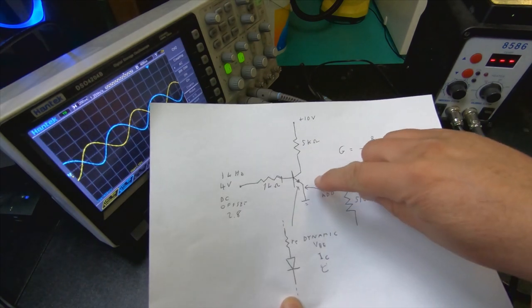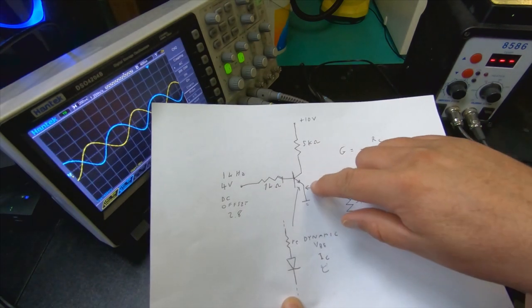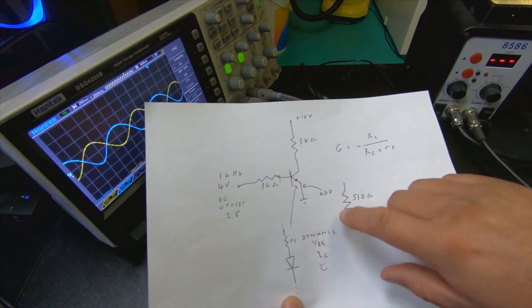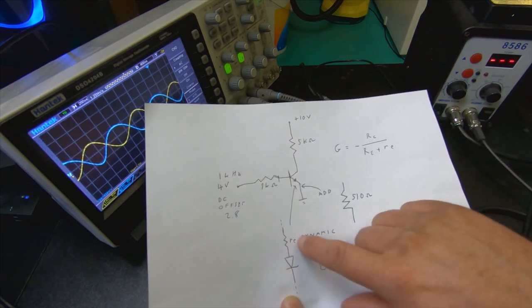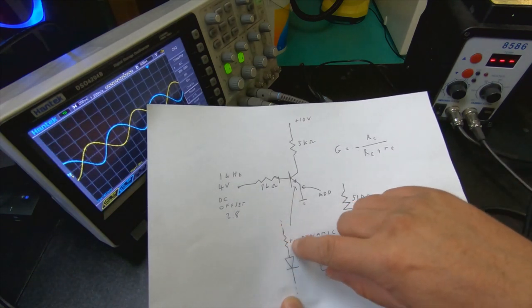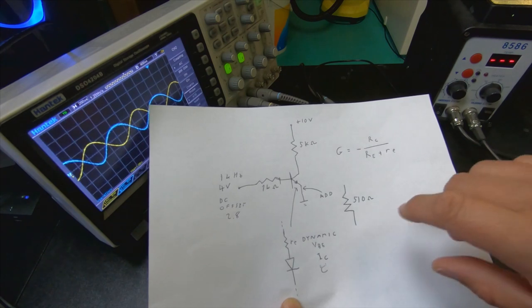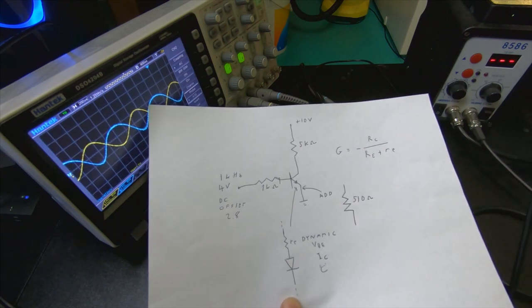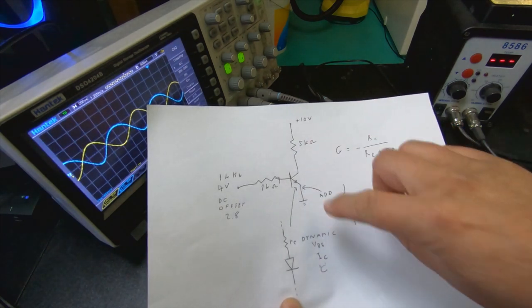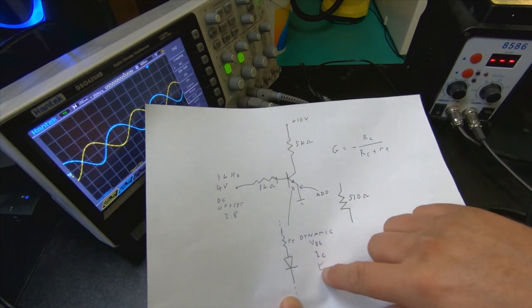So the issue here that we're having is that the base to emitter connection actually is represented by a theoretical pure diode, but also a small resistance called Re, which is dynamic. So it varies based on what the base to emitter voltage is, and what the collector current is, and then also temperature.